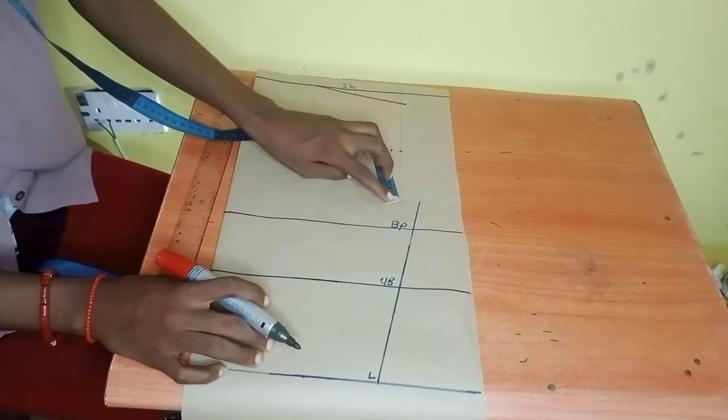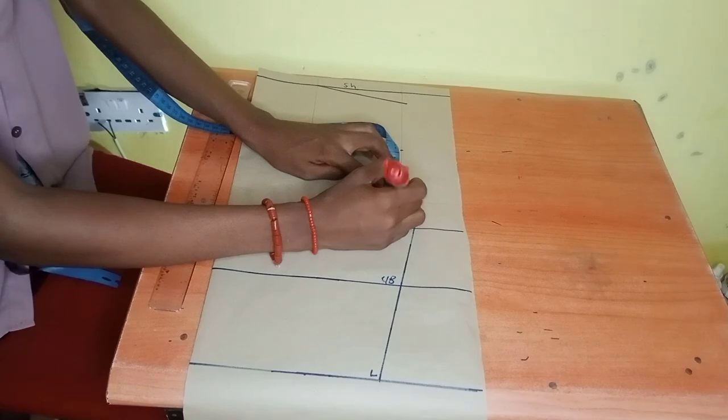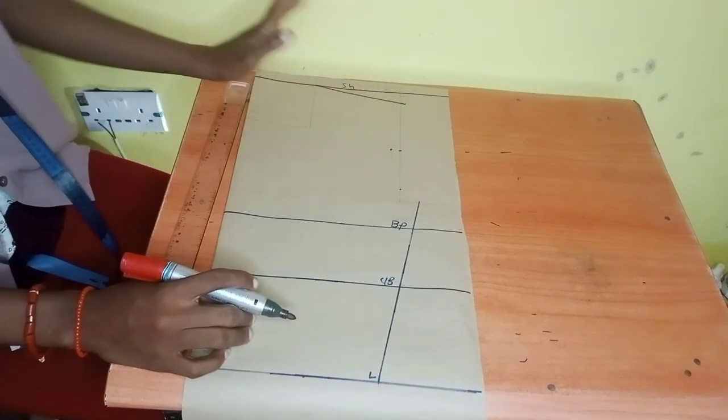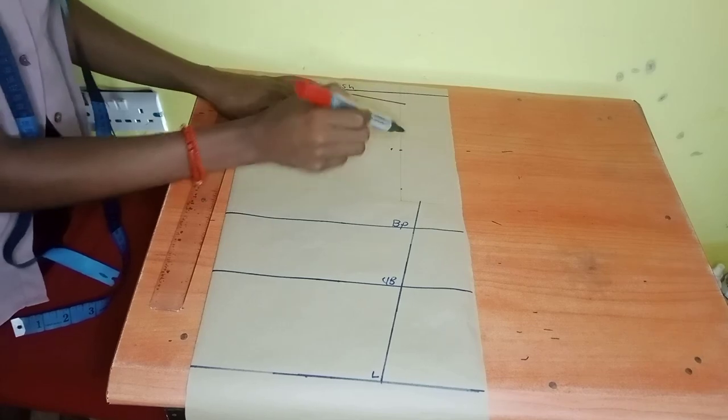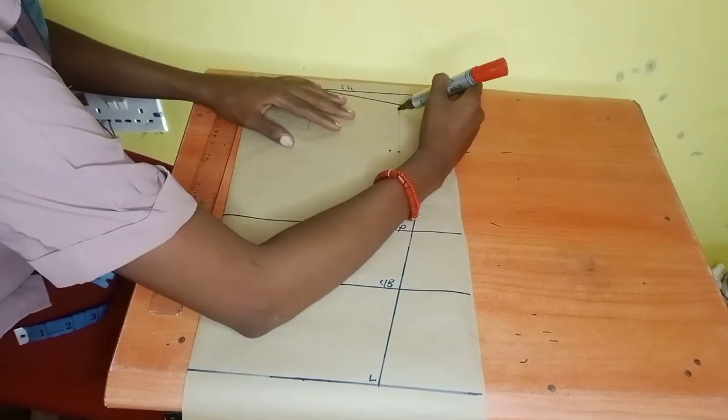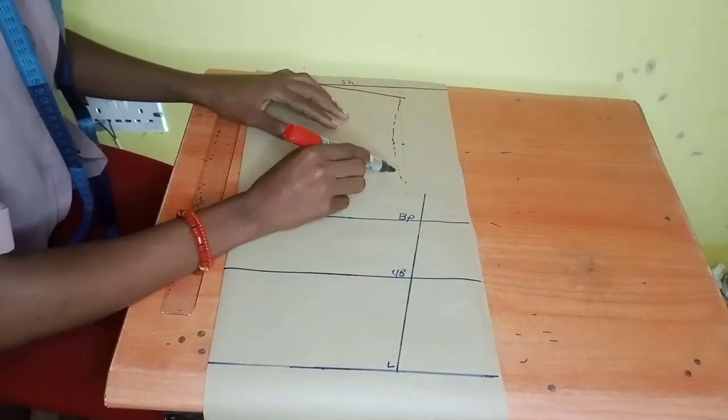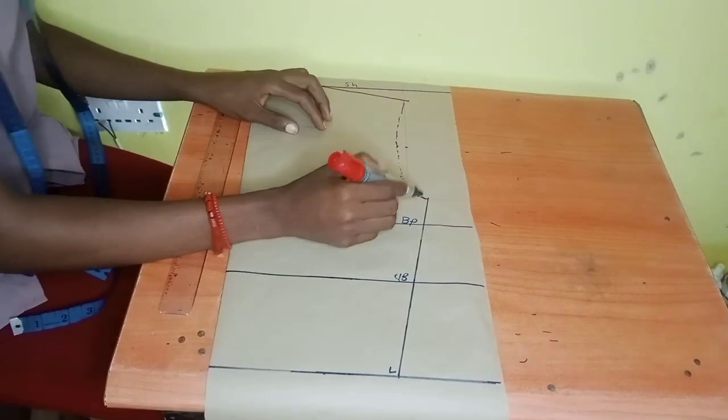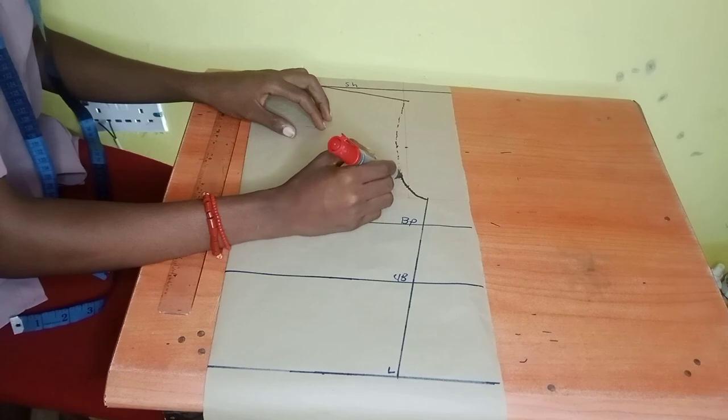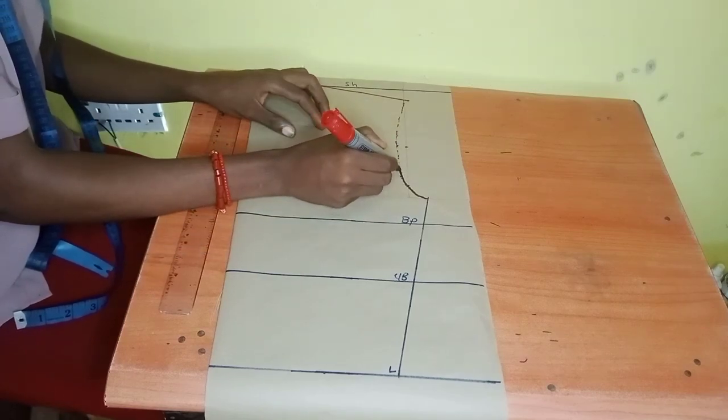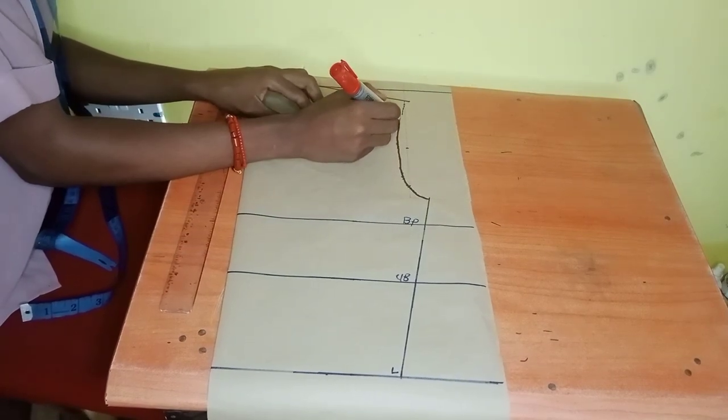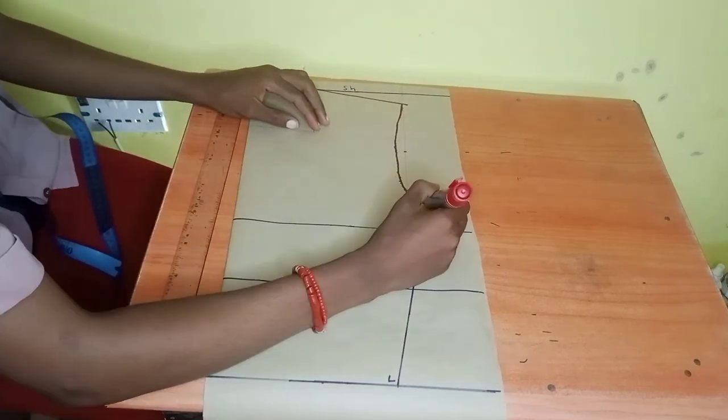From under your armhole, I'll be going with the same measurement that is from my armhole to my bust point. For me it is one inch. Then from there I'm just going to be doing dotted marks, connecting it to that one inch mark and then down to my bust point. Now you are done with your armhole, it's just that easy.